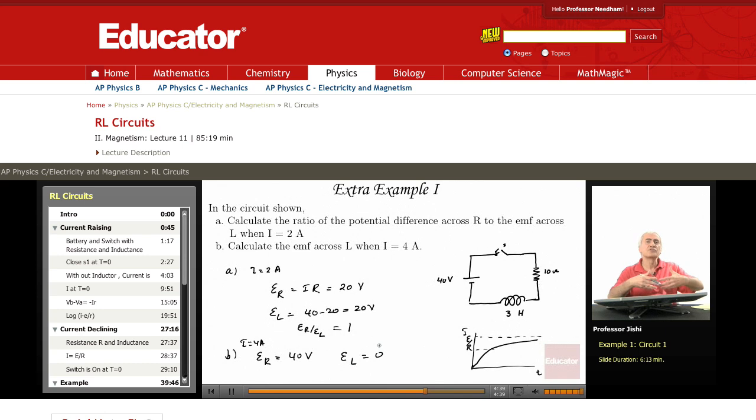That is, all the voltage of the battery now appears across R, and there is no more voltage across the inductor. EL is 0. Clearly, because when we reach E over R, the current stops changing. That's the maximum value of the current, and when it reaches that current, it stops changing.